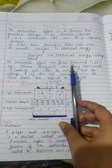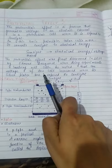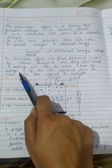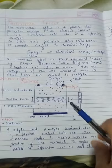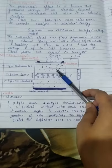The photovoltaic effect was accidentally discovered by Edmund Becquerel while doing experiments including wet cells. He noticed that when the wet cell's silver plate was exposed to sunlight, there was an increase in the voltage of the cell.